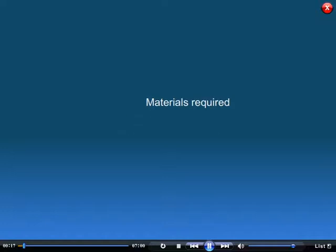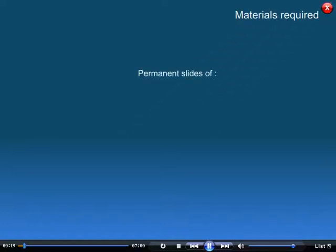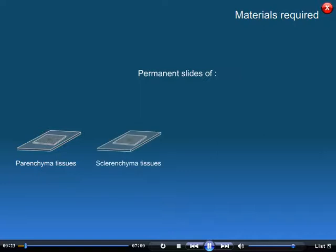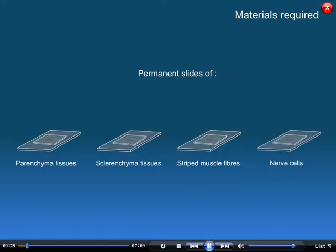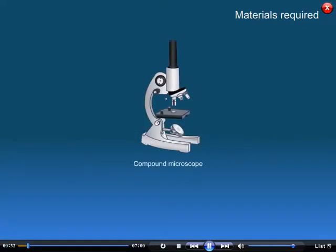Materials required: permanent slides of parenchyma tissues, sclerenchyma tissues, striped muscle fibres and nerve cells, and a compound microscope.